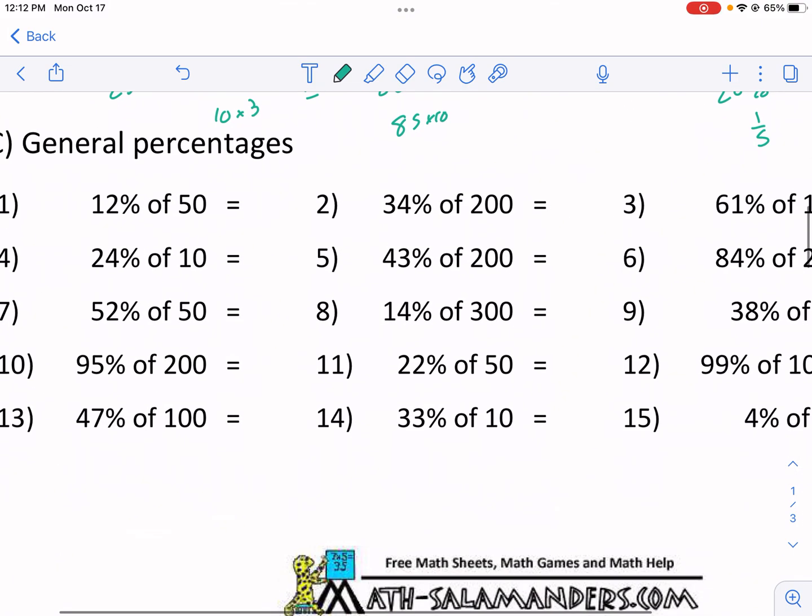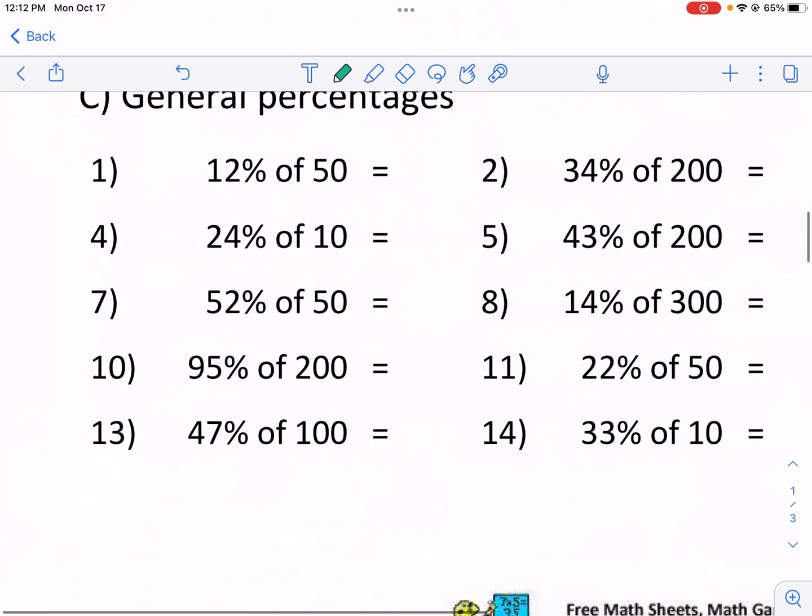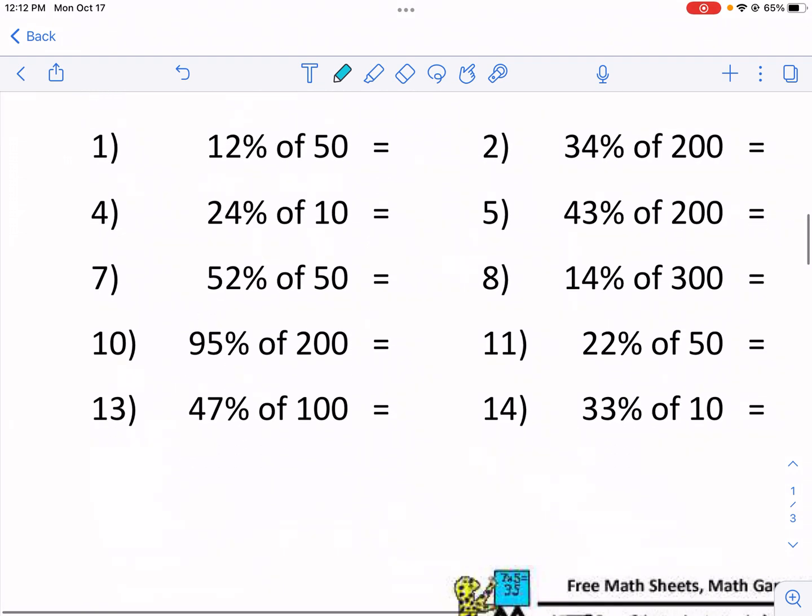If you're looking for some of these general percentages, this is the toughest section. Again, the building block method is going to be the easiest. But some of these, the hack is actually pretty key for them. So, for example, 12% of 50. Well, guess what? 50% of 12 is way easier. Guess what that is? That's 6. So think about using this strategy for this section especially because these numbers are probably easier percents than these numbers.